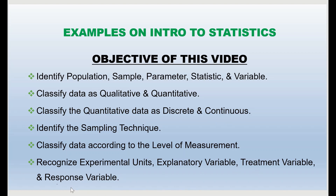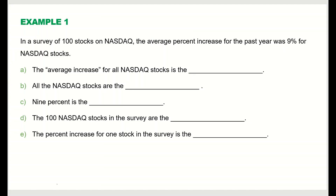We will also classify data according to the level of measurement and recognize experimental unit, explanatory variable, treatment variable, and response variable. Let's begin with the first example: in a survey of 100 stocks on Nasdaq, the average percent increase for the past year was 9 percent for Nasdaq stocks.